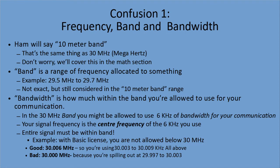Next confusion: frequency, band, and bandwidth. Ham operators will say something's on the 10 meter band. It's a simple calculation from the speed of light that we'll cover in other sections, but a 10 meter band is the same as 30 megahertz. A band is a range of frequency allocated to something — so you'll get a band going from 29.5 MHz to 29.7 MHz where you're allowed to communicate. The math doesn't always match up exactly, and a lot of the bands are named for traditional reasons.